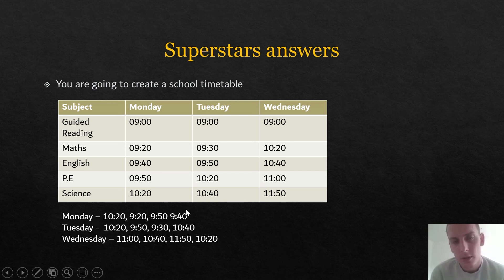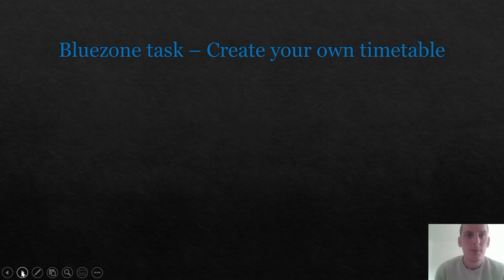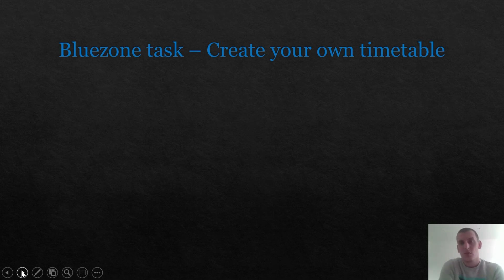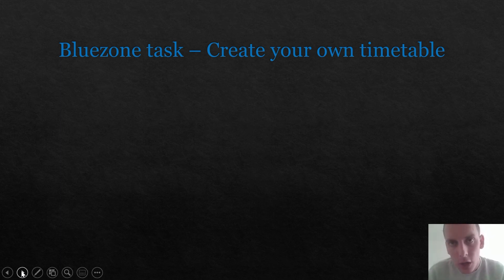As always, if you'd like to leave at this point, that is absolutely fine. I would advise staying on and doing the Blue Zone task, but it is up to you. If you're going — goodbye! Please send me your work. If you're staying — hooray! Blue Zone: you are going to create your own timetable. This can be any kind of timetable — a bus timetable, a train timetable, a school timetable, an office schedule — whatever you want. But it needs to be in chronological order and have the right headings. Make it as fantastic as possible. Pause the video, complete that, and then come back.